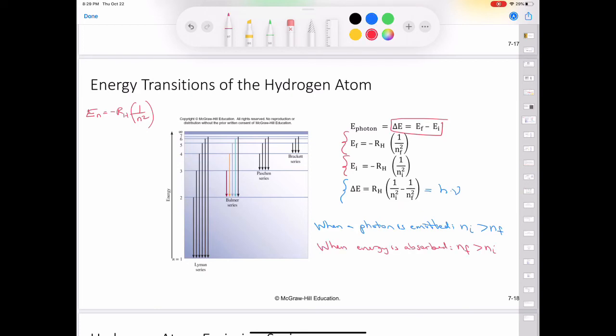When energy is absorbed, n initial will be less than n final, and the term in parentheses will be positive, so that delta E will be positive. Each spectral line in the emission spectrum corresponds to a particular transition in a hydrogen atom. When we study a large number of hydrogen atoms, we observe all possible transitions and hence the corresponding spectral lines. The brightness of a spectral line depends on how many photons of the same wavelength are emitted.